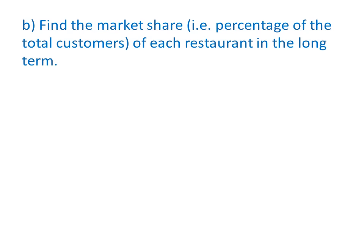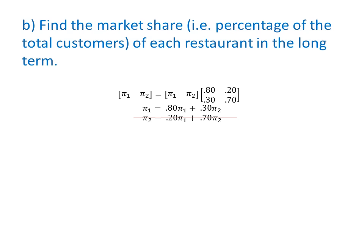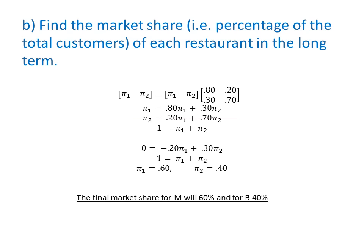Next, we want to know the market share of each restaurant in the long run. When the term 'long run' comes up, that means the steady-state probabilities. We write the equation: vector π equals vector π multiplied by one-step transition probability matrix P. That leads to two equations — one is always redundant, so we drop it and add the equation π₁ + π₂ = 1. Solving these two equations gives π₁ = 60% and π₂ = 40%, meaning the long-run market share of restaurant M is 60% and restaurant B is 40%.